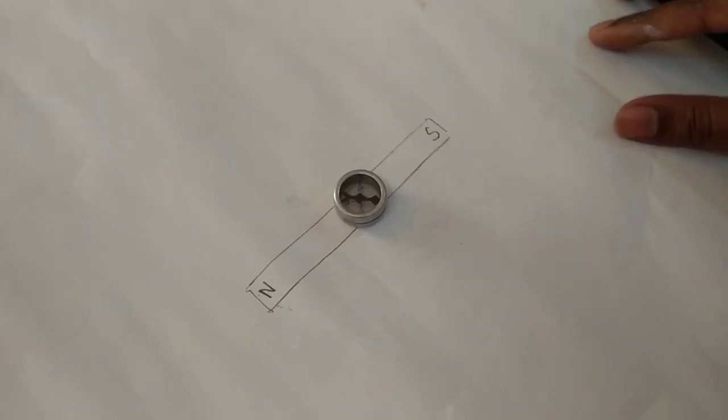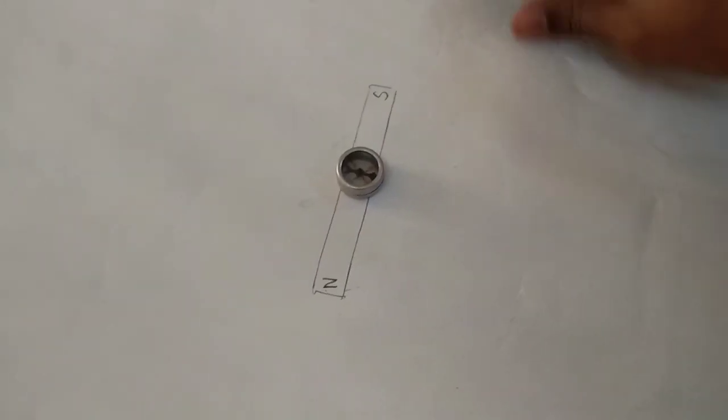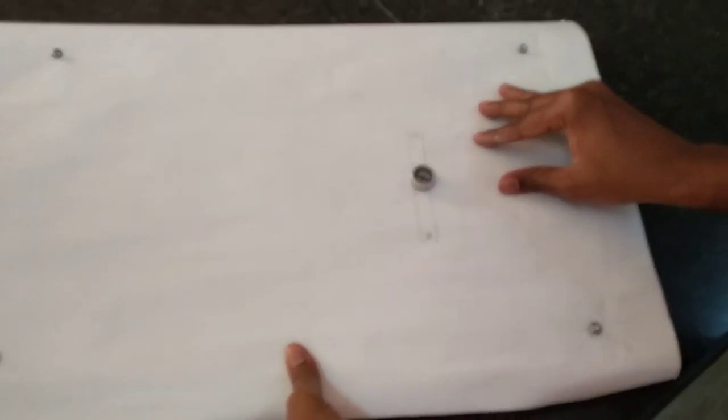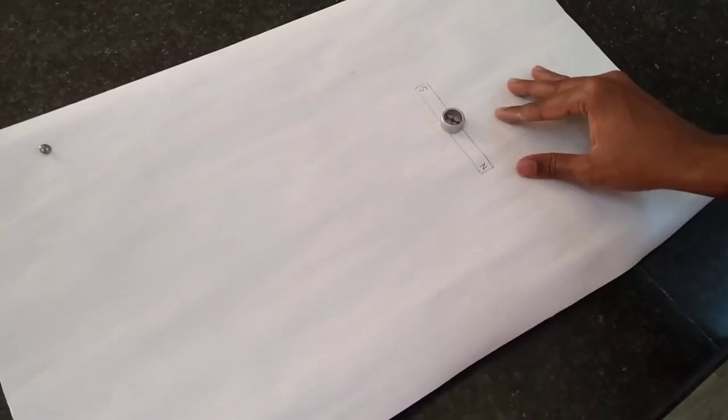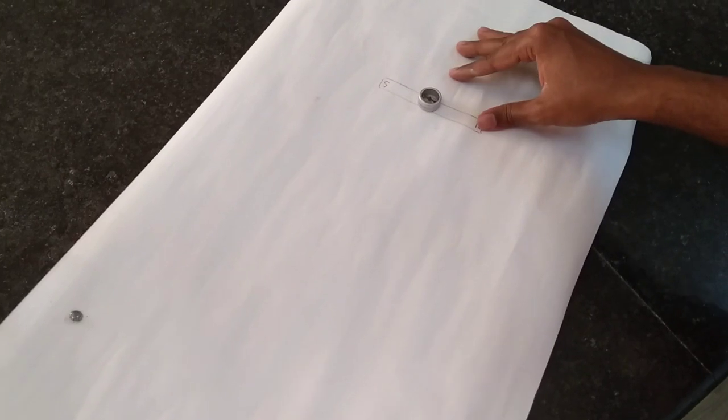I'm rotating the drawing board along with the paper so that the north pole of the traced line and the north pole of the compass needle aligns in the same direction.